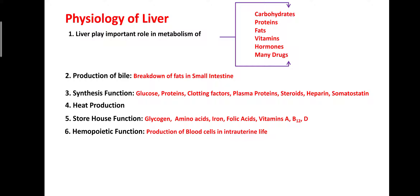The liver also plays an important role in hematopoietic functions — that is, the production of blood cells during intrauterine life — because it acts as a storehouse for vitamin B12. In intrauterine life, the red bone marrow is not yet developed. Therefore, the liver, along with the spleen and thymus gland, is involved in the production of blood cells.